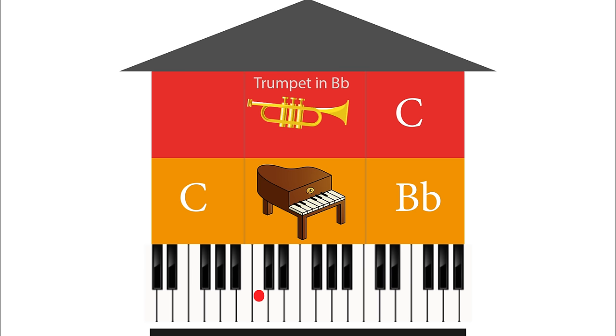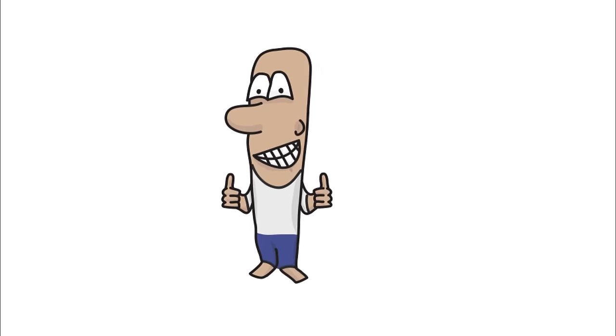So if the piano plays a C, the trumpet will need to finger and play a tone higher — D — to produce the same pitch.